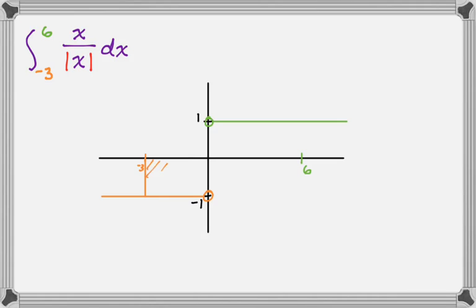The first thing I'm going to do is get this rectangle, which has a base of 3 and a height of -1. That's going to have an area of -3. Then we're going to get this rectangle right here, which has a base of 6 and a height of positive 1, so that's going to have an area of 6. If we sum up those areas, we end up with 3. The definite integral from -3 to 6 is just positive 3.